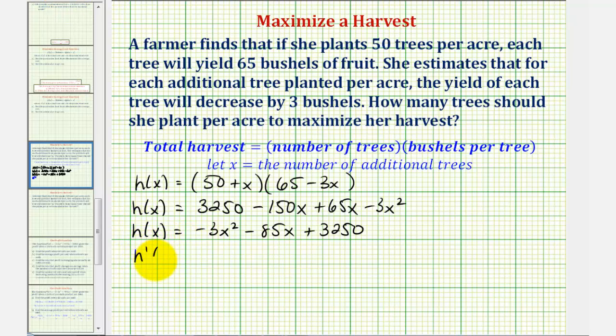So h'(x) is equal to negative 6x minus 85, and then we'd have plus zero. Notice how the derivative function is a linear function, which is never undefined.